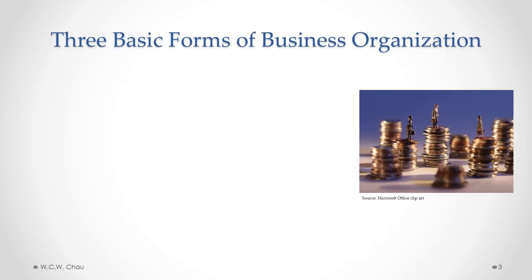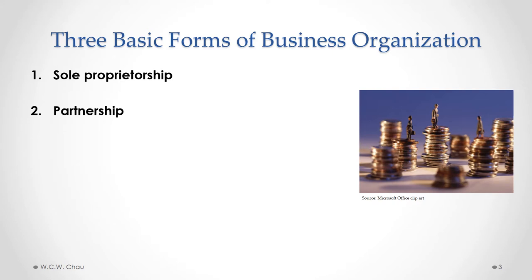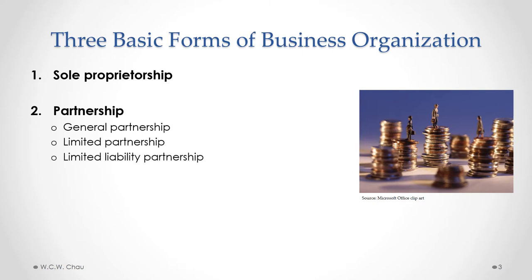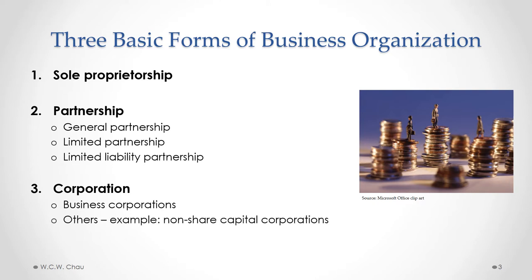In this module, we will look at the three basic forms of business organization. The most basic one is the sole proprietorship. Then we'll look at the partnership and its various types, which are the general partnership, the limited partnership, and the limited liability partnership. The last form we'll look at is the corporation, specifically business corporations. There are other types, such as non-share capital corporations used by not-for-profit or charitable organizations, but we'll focus only on business corporations.